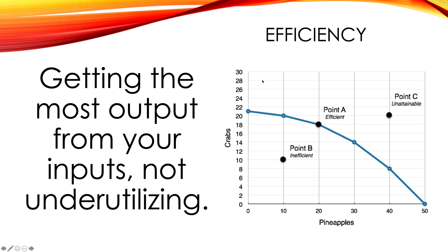Any point outside of that production possibilities curve is unattainable — it's impossible; it cannot be done at this time. Any point inside is underutilizing. So a point like point B here would be inefficient — this economy is not using its resources to the fullest of their potential. An economy that's efficient is getting the most out of what it puts in. That's the first goal.